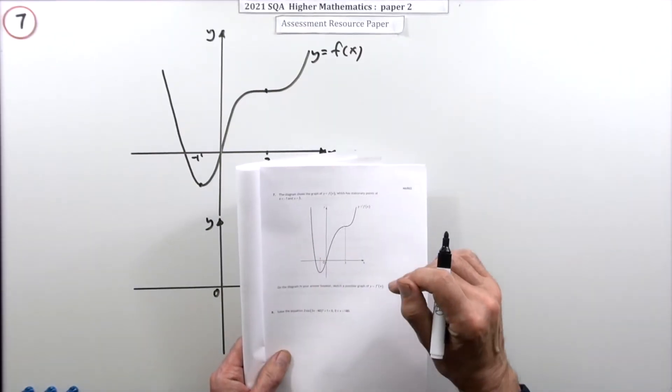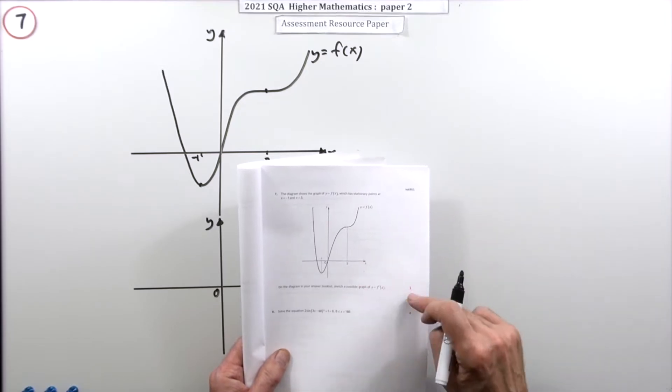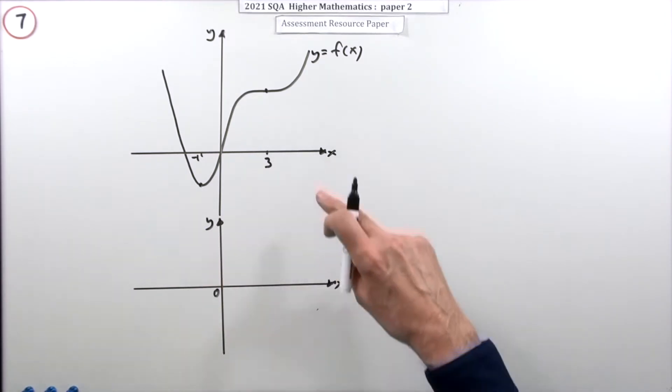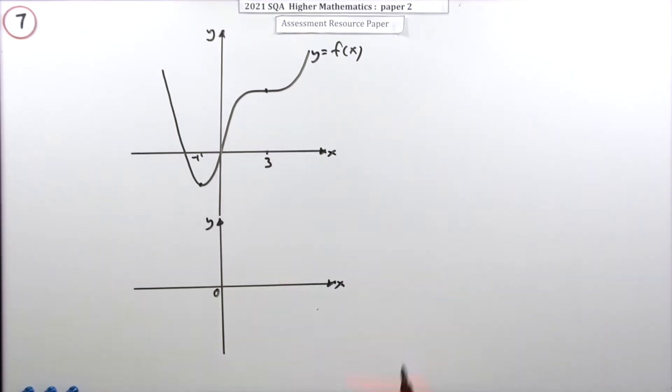Question 7 then from paper 2 of the 2021 Higher Math Resource paper. Three marks here for sketching a possible graph of the derivative of the graph of a given function.